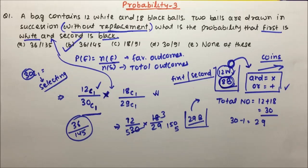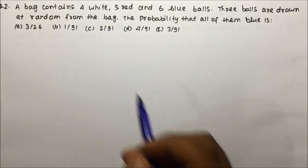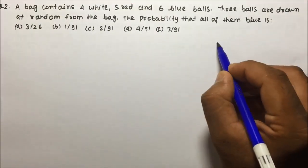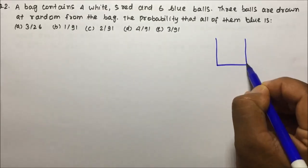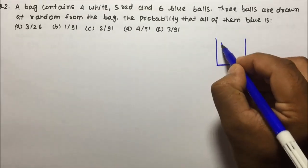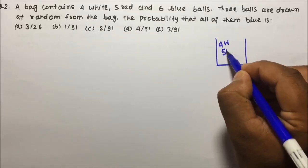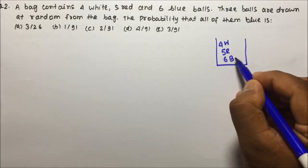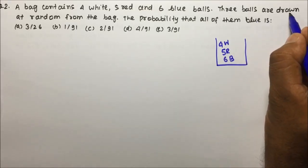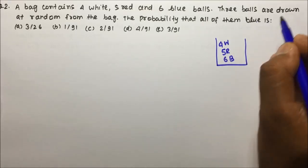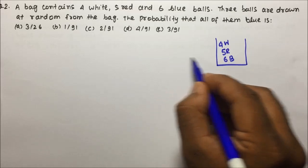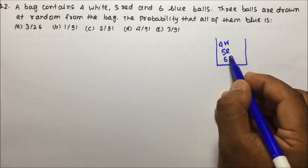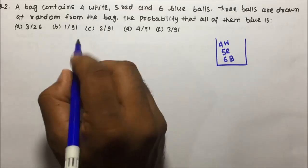Now let us move to question number 2. A bag contains 4 white, 5 red, and 6 blue balls. Three balls are drawn at random from the bag. What is the probability that all of them are blue? This question is very simple.